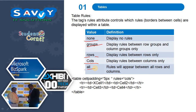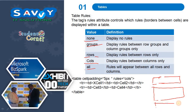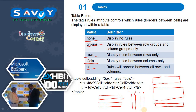With none, no rules will be displayed. For groups, THead is one group, TBody is one group, and TFoot is one group — so three groups will be displayed. Only rows gives only row lines. Only columns displays only column lines. All means a complete combination of rows and columns will be displayed.